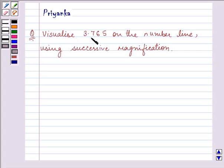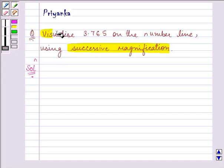It says, visualize 3.765 on the number line using successive magnification. So let us proceed on with our solution and I'll be telling you how to use successive magnification to visualize 3.765 on the number line.